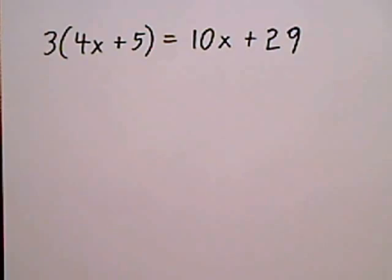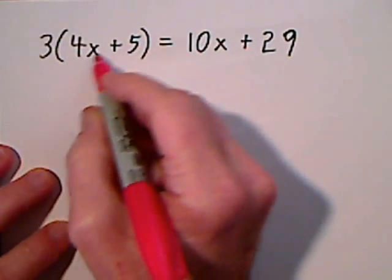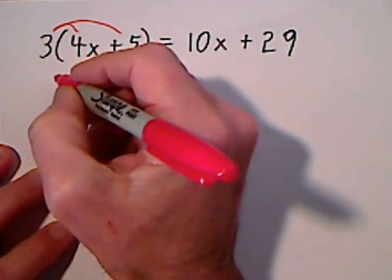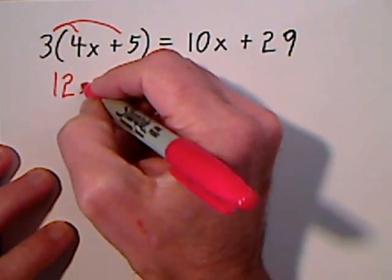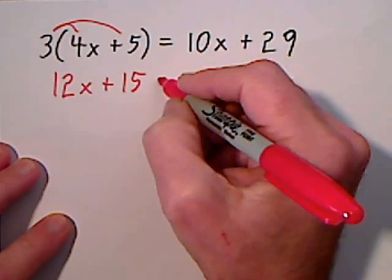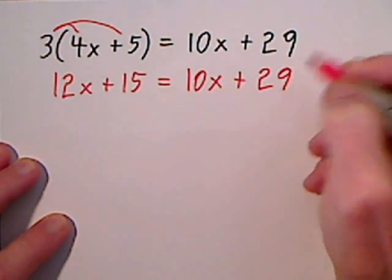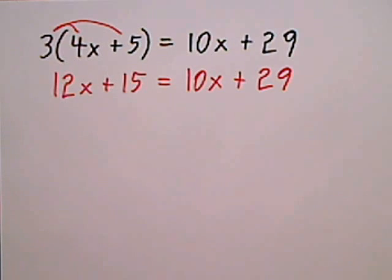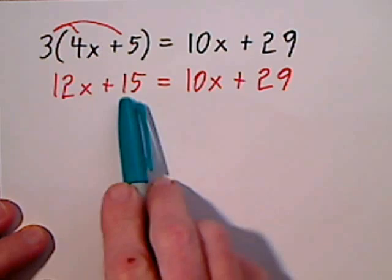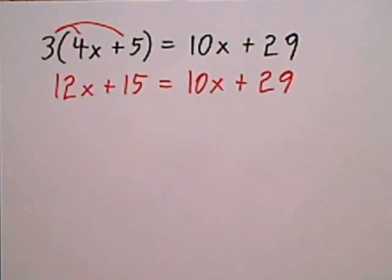On our first one, you're trying to get x by itself. You cannot do so because this term is trapped in parentheses. Use the distributive property — send in the 3. This gives you 12x plus 15. And then on the other side, we still have 10x plus 29. From there, you could get rid of 29, get rid of 10x, get rid of 15, or get rid of 12x. Any one of those is a legitimate first move.